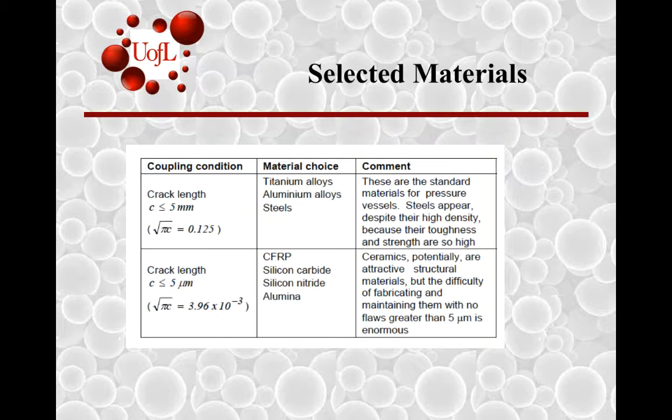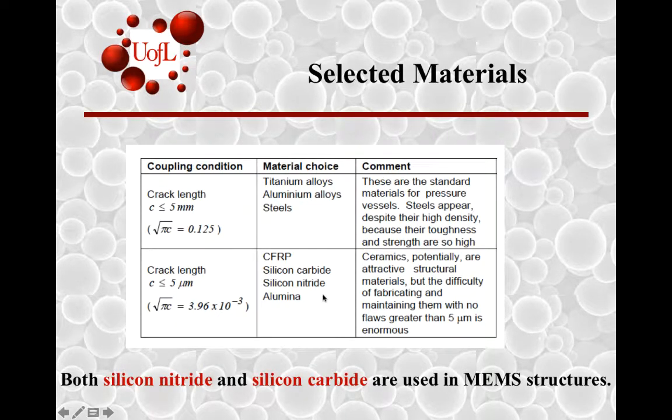It turns out that when you're making very tiny structures such as MEMS - we have the MNTC Micro Nanotech Center on campus in Shoemaker Research Building - they create MEMS structures out of both silicon nitride and silicon carbide. You know what MEMS stands for? Micro Electromechanical System. For those, you can use some of these ceramic structures, and usually you form that by using ceramic precursors that are deposited as thin film.